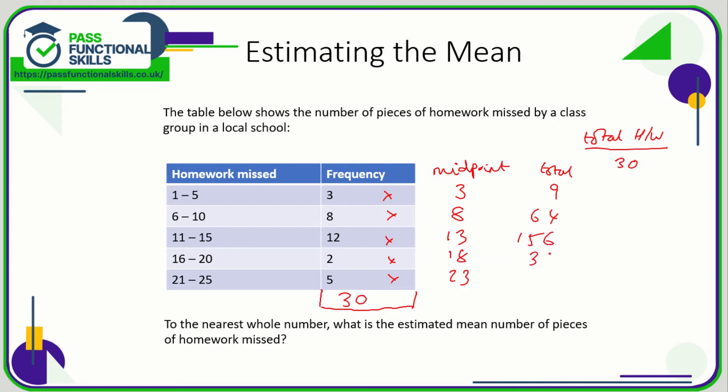Two eighteens, thirty-six. And twenty-three times five is one hundred and fifteen. So to get the grand total number of bits of homework missed, it's all these numbers added together. So 115 plus 36 plus 156 plus 64 plus 9. That comes to a total of 380. So in total, 380 bits of homework missed by 30 students. If we divide 380 by 30, we get our estimated mean. And that comes to twelve point six recurring. So to the nearest whole number, that is thirteen bits of homework missed.